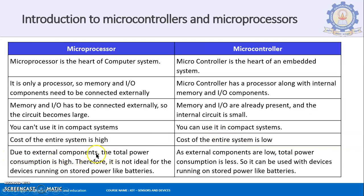Due to the external components, total power consumption of a microprocessor is high — memory and everything are external and need their own power supply — so it is not ideal for devices running on stored batteries. For example, gadgets like a smartwatch are battery-driven devices, so a microprocessor is not the best option there. For those kinds of applications, you go for the microcontroller. As external components are few, total power consumption is less, making it suitable for devices running on stored power.